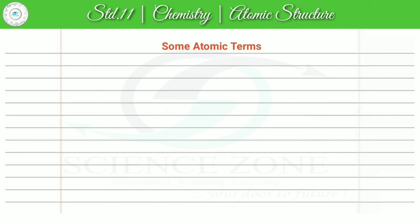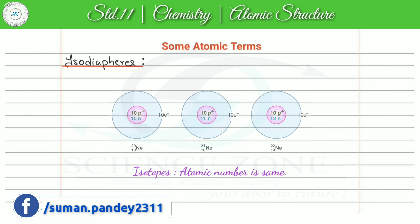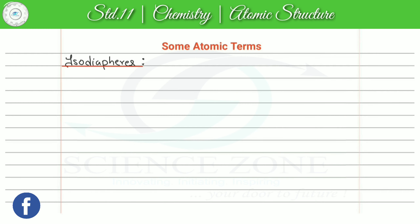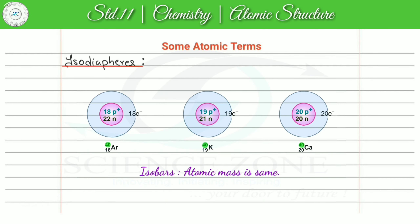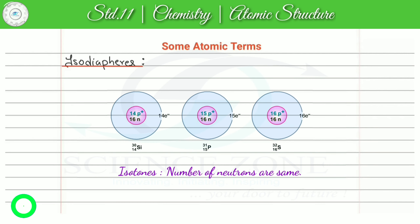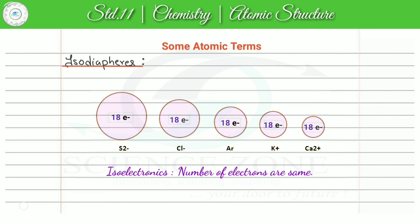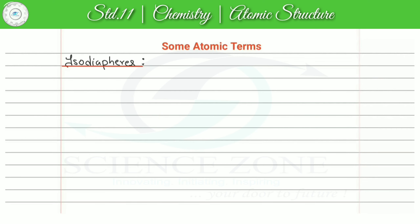Our next topic is isodiaphers. For isotopes, atomic number was same; for isobars, mass number was same; for isotones, number of neutrons was same; for isoelectronic species, number of electrons will be same. And now what we are studying is isodiaphers.